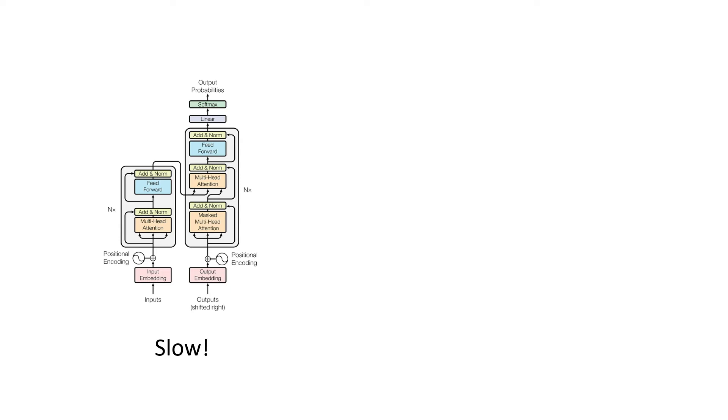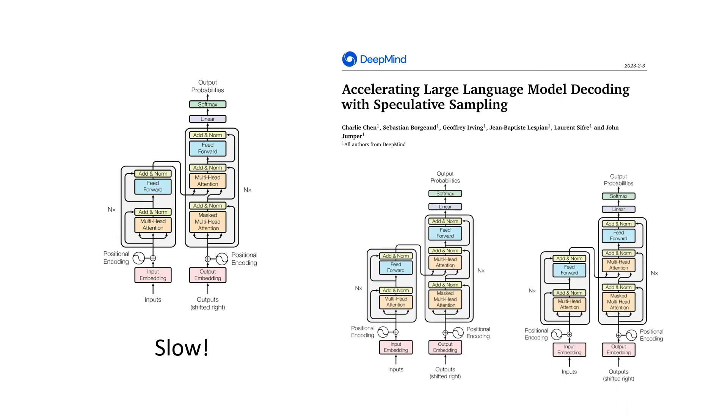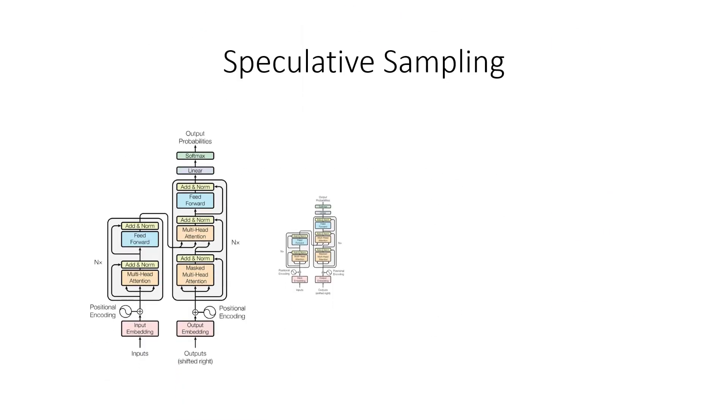Transformers can be really slow, so this DeepMind paper proposed to speed it up by running two transformers at the same time. Wait, what? My name is Bai, I'm a machine learning engineer and a PhD in natural language processing, and today I will be presenting speculative sampling.